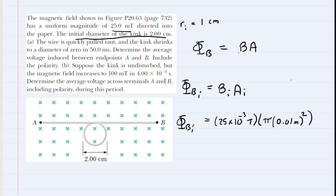Let's go ahead and calculate the initial magnetic flux. When you do that, the initial magnetic flux equals roughly 7.85 times 10 to the minus 6. The unit is tesla times meters squared, which is also known as a Weber. So you can simply call this a Weber. There's your initial flux.